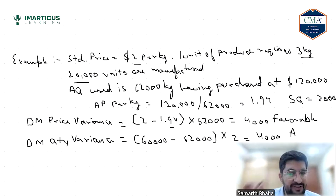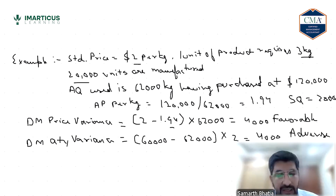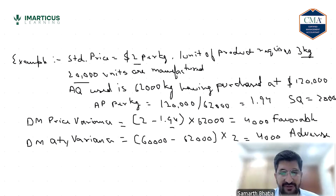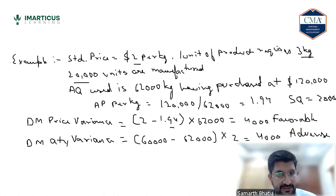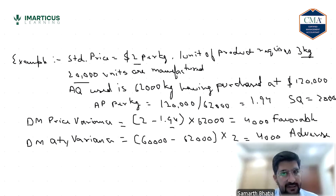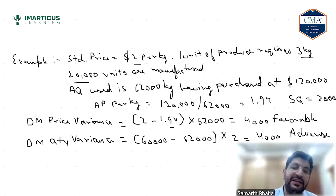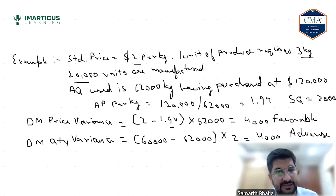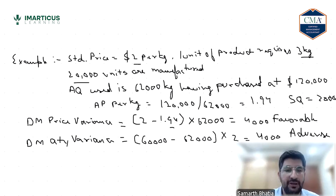So the result is $4,000 Adverse (unfavorable). To summarize: Direct Material Price Variance is $4,000 Favorable — we saved money on price. Direct Material Quantity Variance is $4,000 Adverse — we incurred extra cost by using more material than planned. The price variance increases profit; the quantity variance reduces profit.